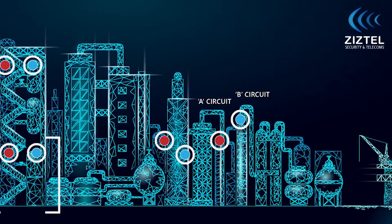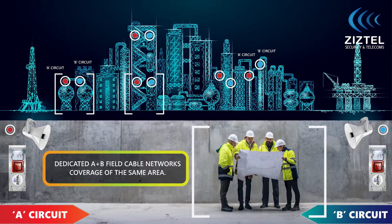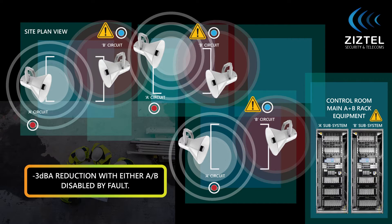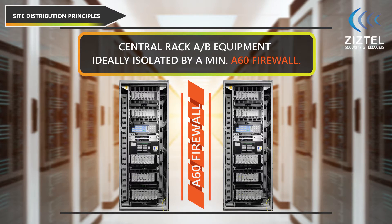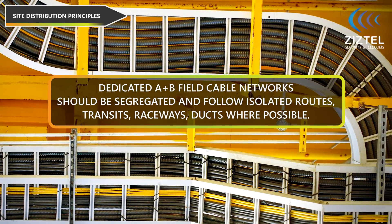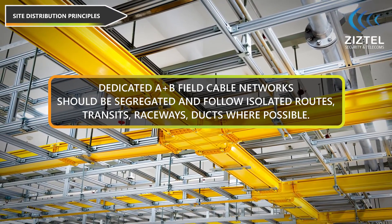This means a minus three decibel sound pressure reduction with either A/B subsystems affected by a fault condition. A/B rack equipment should ideally be separated by a minimum 60-degree firewall. A/B field cable networks should be segregated following isolated routes through transits, raceways and ducts where possible.